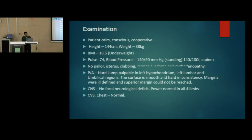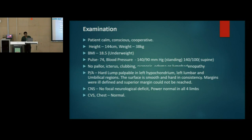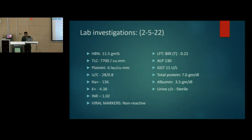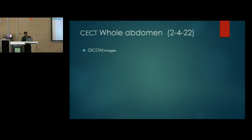On examination, the patient was hypertensive with BP 140/90 in standing position and 140/100 in supine position. Apart from that, general examination was unremarkable. On per abdomen examination, there was a hard lump palpable in the hypochondrium, left lumbar, and umbilical region. The surface was smooth, hard in consistency, with ill-defined margins, and the superior margin could not be raised. The rest of the systemic examination was normal with no focal neurological deficit, and general lab investigations were all normal.